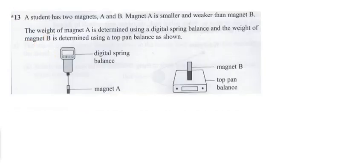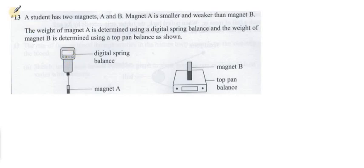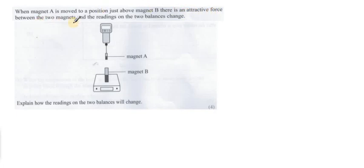This is question number 13. A student has two magnets A and B — magnet A is smaller and weaker than magnet B. The weight of magnet A is determined using a digital spring balance, and the weight of magnet B is determined using a top pan balance. When magnet A is moved to a position just above magnet B, there is an attractive force between the two magnets and the reading on both balances changes. We need to explain how the readings on the two balances will change.